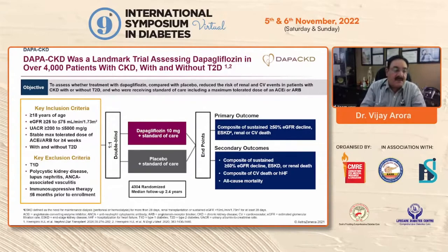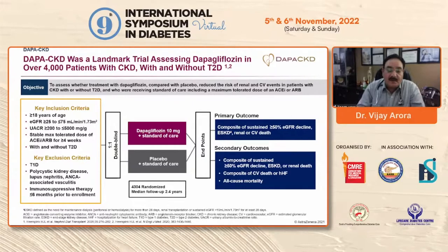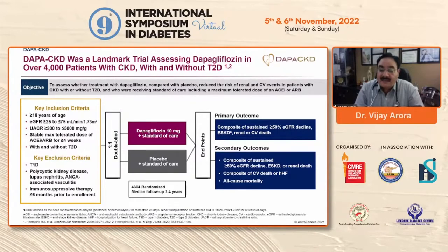Exclusion criteria included type 1 diabetes, polycystic kidney disease, lupus nephritis, ANCA-associated vasculitis, and immunosuppressive therapy within 6 months prior to enrollment. Patients were double-blinded: one group on dapagliflozin 10 mg with standard of care, the second on placebo with standard of care. The median follow-up was 2.4 years. The primary endpoint was composite of sustained >50% eGFR decline, end-stage kidney disease, or renal/cardiovascular death. The secondary outcome included composite of cardiovascular death or hospitalization for heart failure, or all-cause mortality.